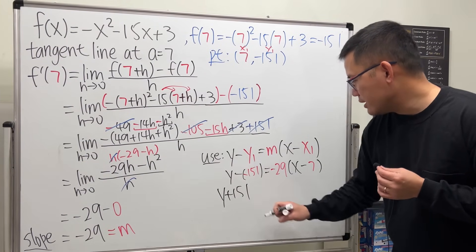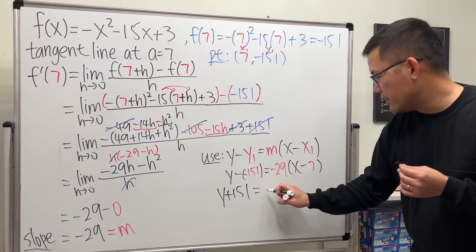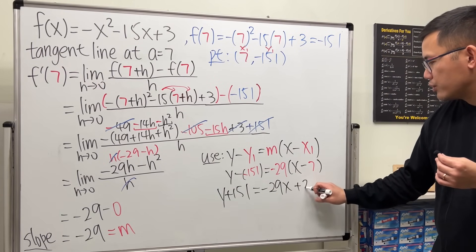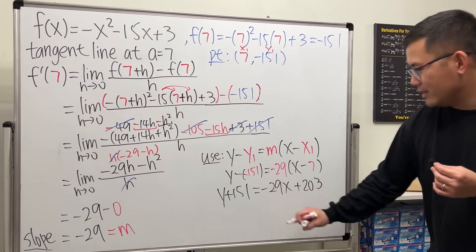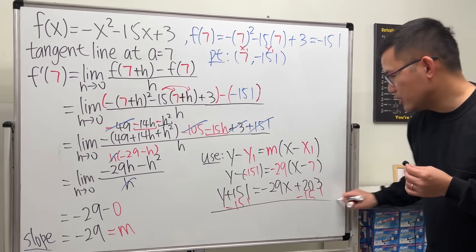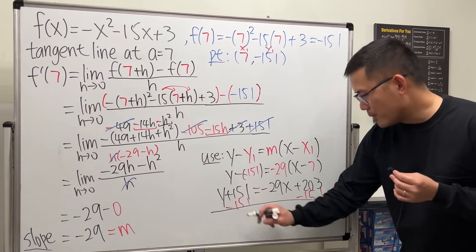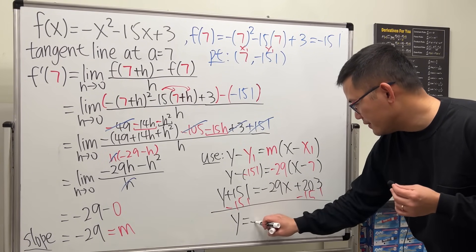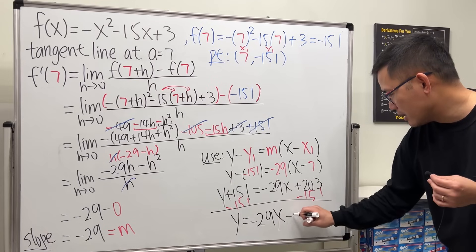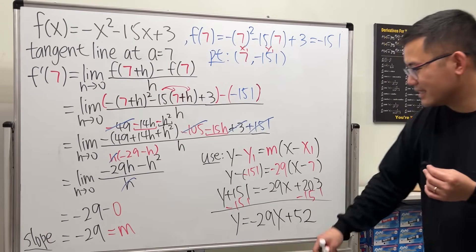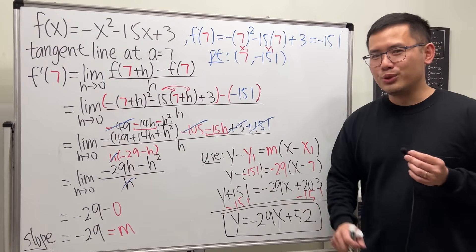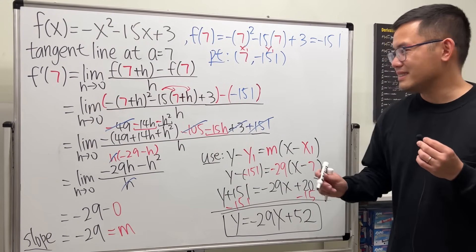Working this out: y plus 151 equals negative 29x plus 203. Then subtracting 151 from both sides, ladies and gentlemen, the equation of the tangent line is y equals negative 29x plus 52. So hopefully this YouTube tutorial is helpful — and that's it!